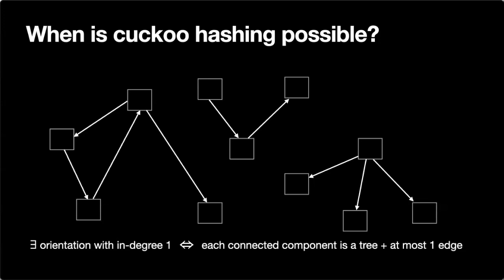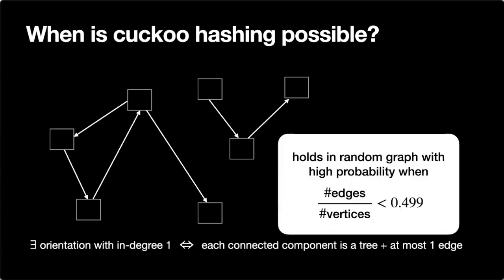We can only store one key in each memory location, so we need an orientation with in-degree one. Such an orientation is possible if and only if each connected component is a tree plus maybe one more edge. The connected component on the left has a cycle — that's not a problem. But a tree plus two edges means more keys than locations, so in-degree one orientation is impossible. It turns out that if you keep the ratio of edges to vertices strictly below one half, say less than 0.499, then in a random graph from random hash functions, we get such an orientation with high probability.